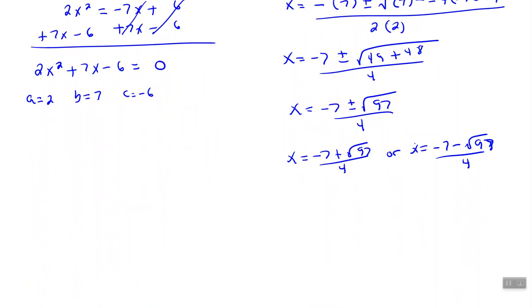Okay, so now this is where I would place this information in my calculator, and then I would get a decimal answer. The decimal answers that I came out with were about 0.712 and -4.212. So I want to round to the nearest hundredth—that's why I went out three places.